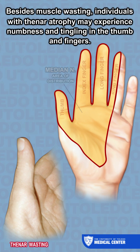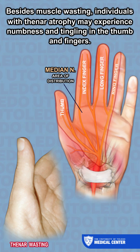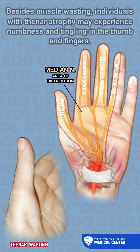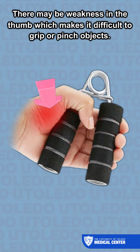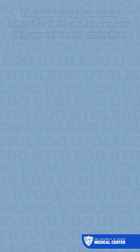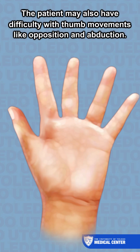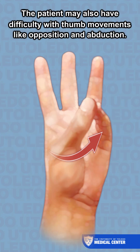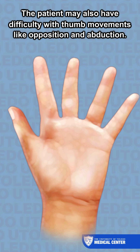Besides muscle wasting, individuals with thenar atrophy may experience numbness and tingling in the thumb and fingers. There may be weakness in the thumb, which makes it difficult to grip or pinch objects. The patient may also have difficulty with thumb movements like opposition and abduction.